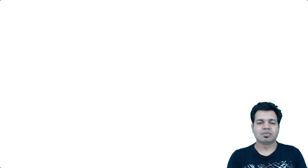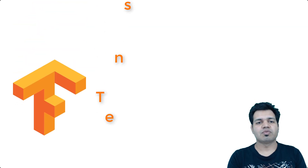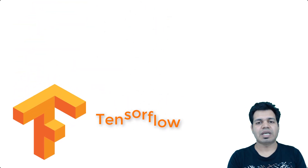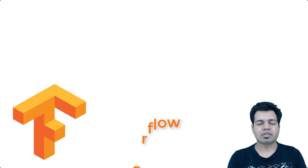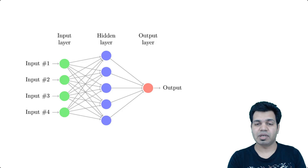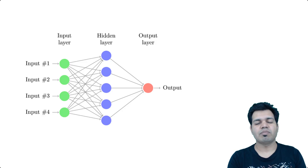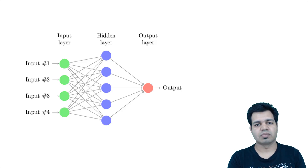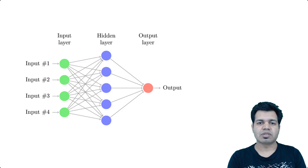TensorFlow is one framework being extensively used by the data science community these days. TensorFlow can train and run deep learning neural networks for handwritten digit classification, image recognition, word embeddings, recurrent neural networks, sequence-to-sequence models for machine translation, and natural language processing.